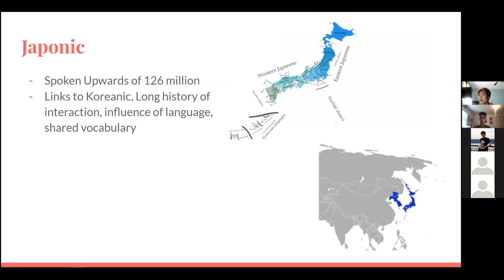For Japonic, as you can get through the name, it mainly has links to Japan and Ryukyuan — spelled R-Y-U-K-U-A-N — spoken by upwards of 126 million people. It has links to Koreanic because of a long history of interaction. Around the first millennium, people have said it came from the archipelago. There has been a long line of influence between Korean and Japonic, as evidenced by shared vocabulary and some shared syntax, with vocabulary similarities being near more environmental things.